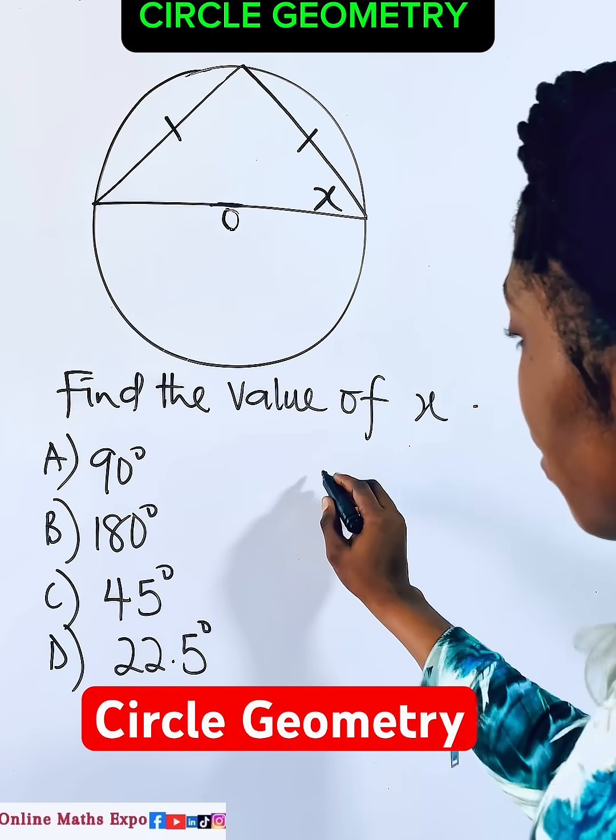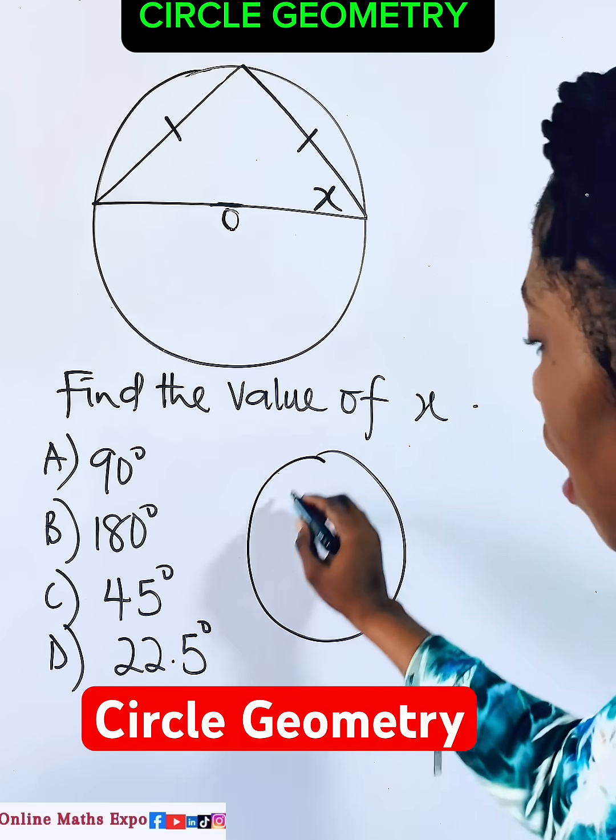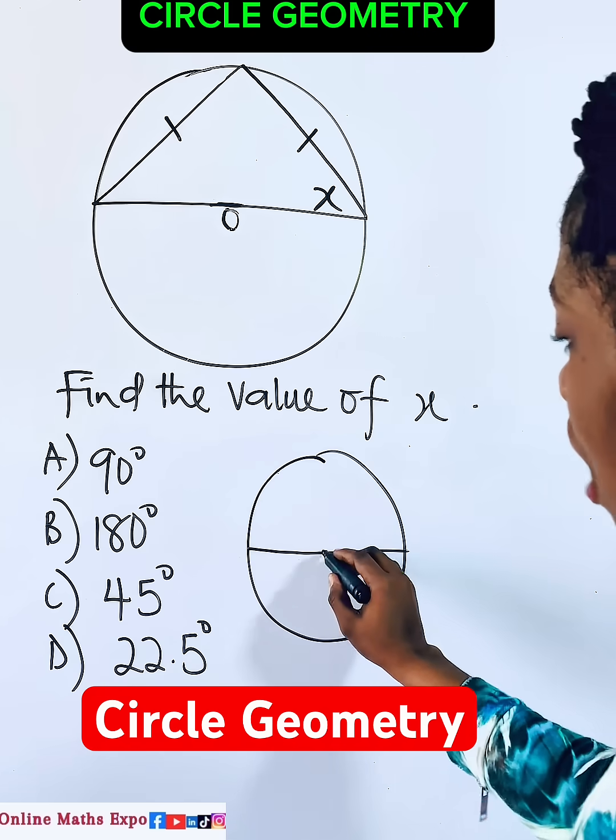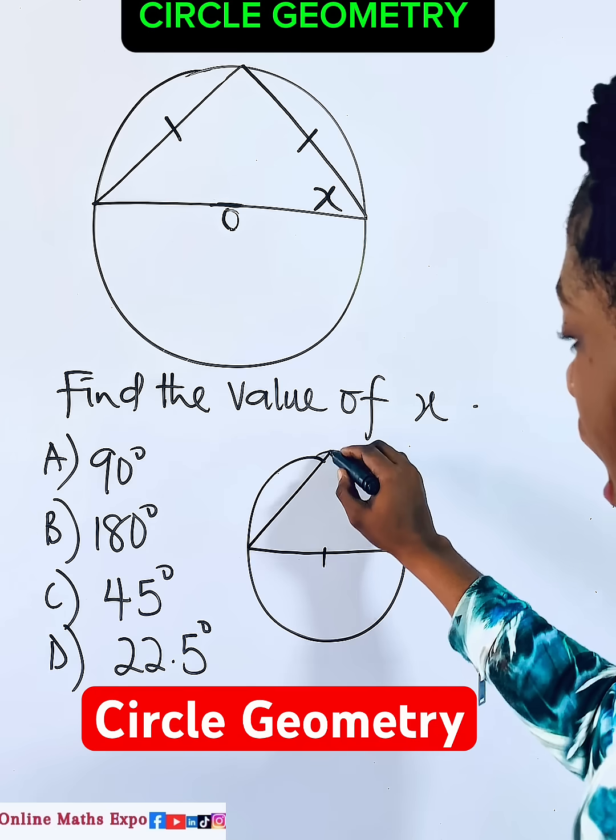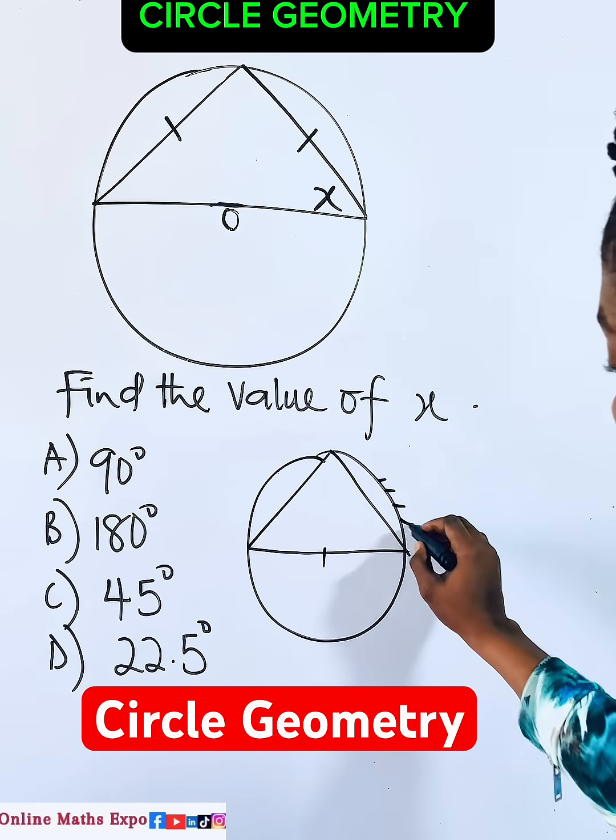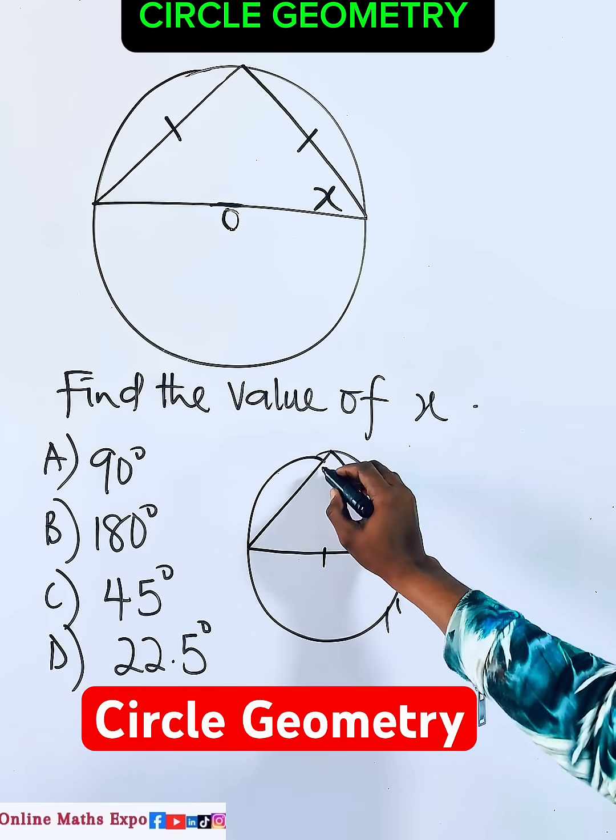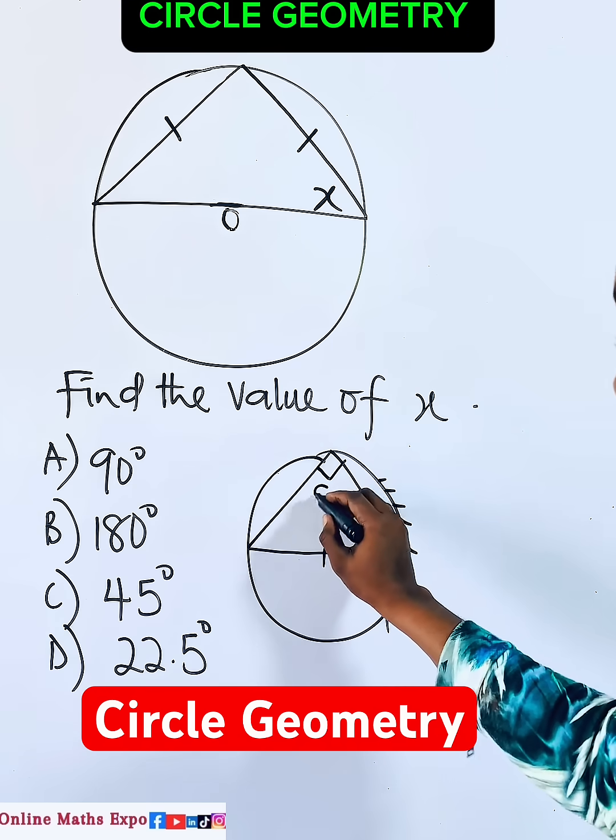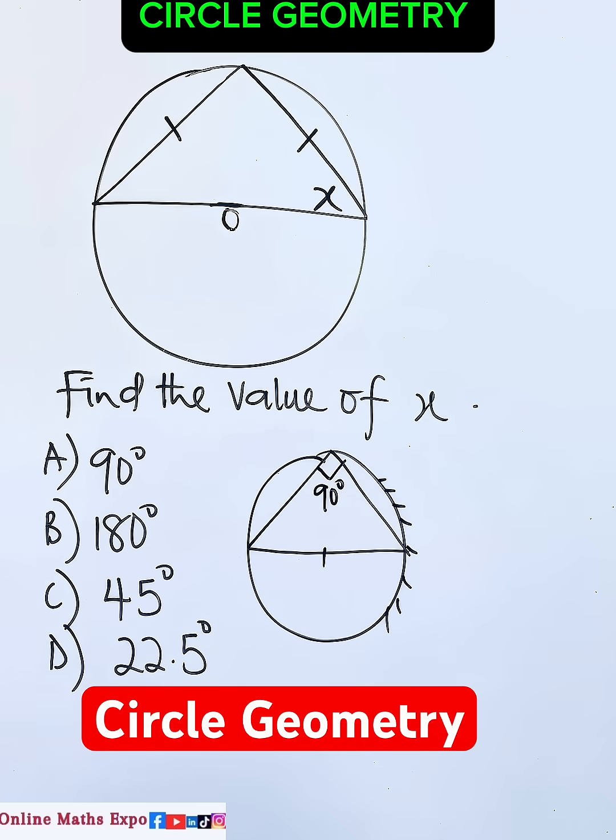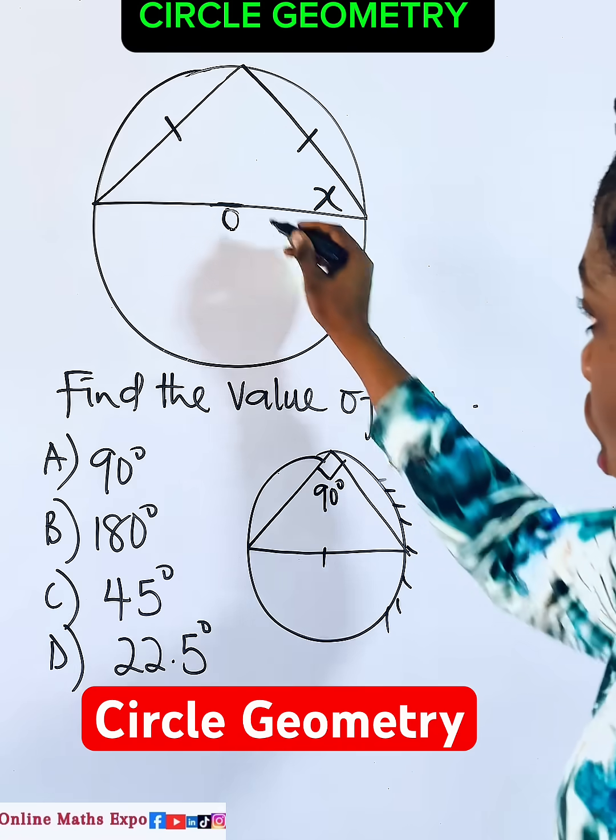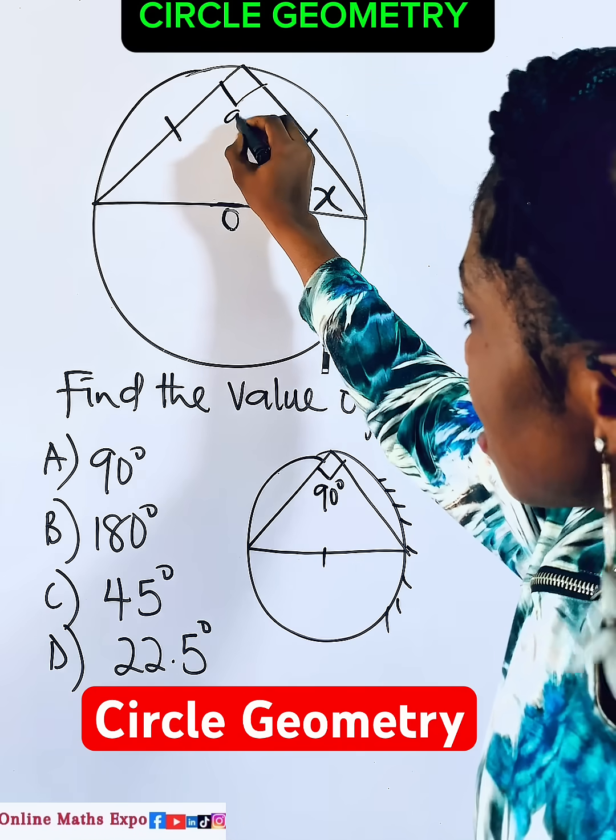So in that case, just remember the theorem that states that when you have a diameter, and this diameter forms angle at the circumference—remember this part is the circumference—that that angle it forms at the circumference is always 90 degrees. So if this is true, it means that this is 90 degrees.